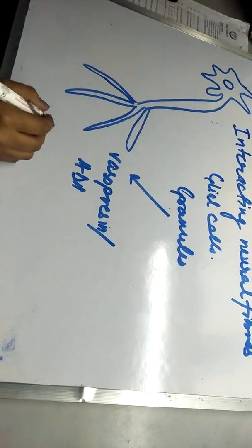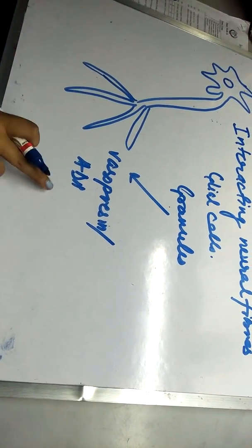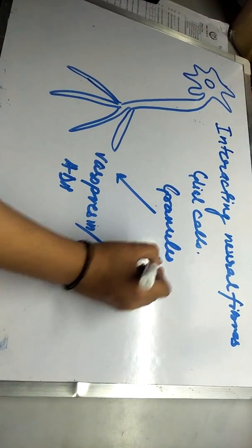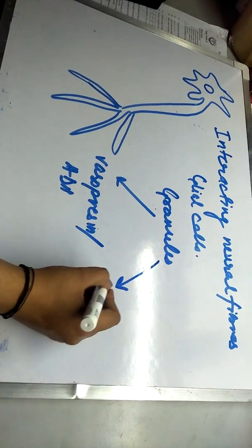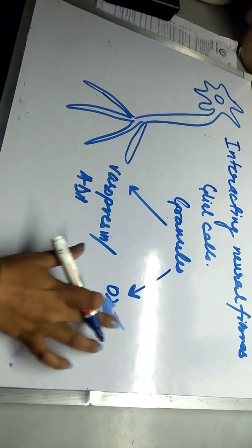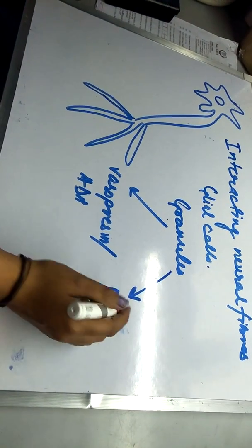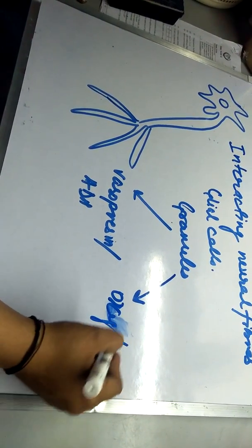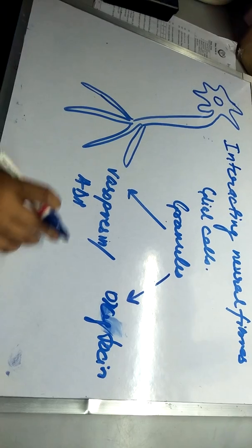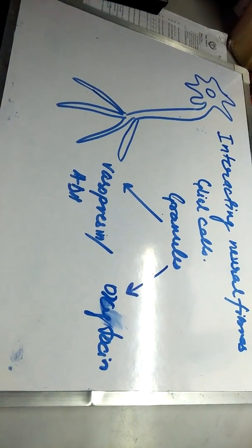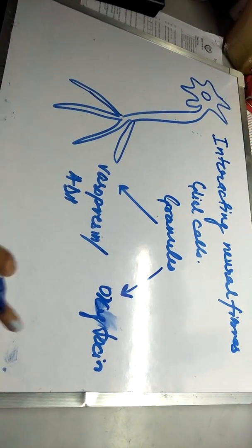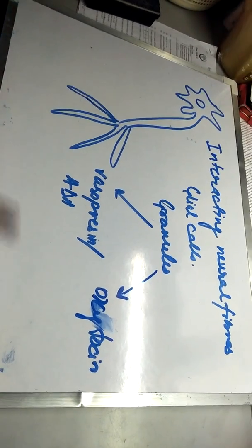ADH causes reabsorption of water from the renal tubules. The posterior lobe also releases oxytocin, which helps in the contraction of the uterus and the release of milk from mammary epithelium.